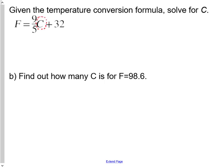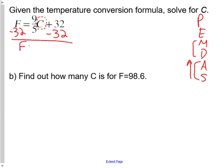And we're going to work up. So we've got to add or subtract first. And so we've got 9 fifths C plus 32. We're going to do the opposite of plus 32. We're going to subtract 32 from both sides. So we're going to get F minus 32 equals 9 fifths C.